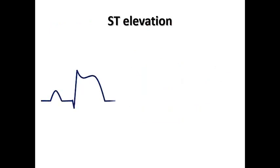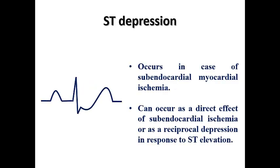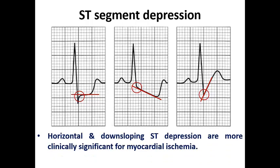ST elevation occurs in the case of transmural myocardial ischemia, as in STEMI or vasospastic angina, usually in the lead facing the infarction — for example, inferior wall MI leads to ST elevation in inferior leads. ST depression usually occurs in subendocardial myocardial ischemia, not transmural, and occurs as a direct effect of subendocardial ischemia or as a reciprocal depression in response to ST elevation. We have three famous morphologies of ST segment depression: horizontal, downsloping, or upsloping, according to the direction from the J point toward the T wave.